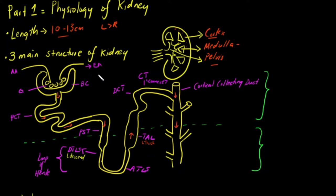Let's quickly look at the nephron, the functional unit of the kidney. Blood supply comes in through the afferent arteriole, which brings blood supply to the nephron. It then goes through a meshwork — a network of small blood vessels known as your glomerulus — where filtration takes place. After filtration, it goes through your efferent arteriole to go back to the bloodstream.